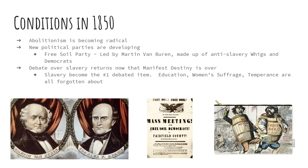Going into the 1850s, abolition is becoming more radicalized. Famous books such as Uncle Tom's Cabin by Harriet Beecher Stowe have come out. Frederick Douglass, the former slave, has escaped and is promoting anti-slavery throughout the country. Then you have people like James Sterling saying slavery is okay, and George Fitzhugh's Cannibals All saying slavery is great. There's a real big debate over slavery. Slavery is going to become the number one debated item now that Manifest Destiny is in the background — education, women's suffrage, and temperance are all pushed aside. Slavery becomes the number one debated item in the 1850s.